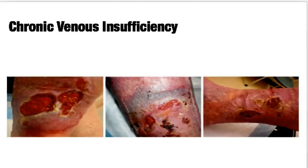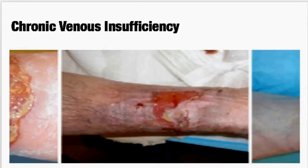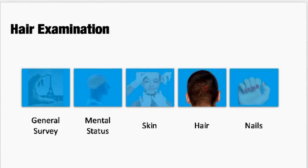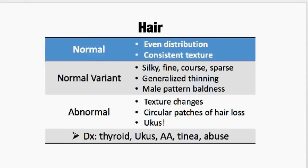Moving on to hair: normally hair should be evenly distributed and consistent in texture — silky and fine or coarse and sparse, but as long as it hasn't changed for the patient, that's probably a normal variant. You may also see some generalized thinning, which can be common with aging, or some male pattern baldness for males with a family history. Abnormally, patients shouldn't have a sudden change in texture, sudden hair loss, or discrete circular patches of hair loss. They definitely shouldn't have things crawling through their hair — like head lice.